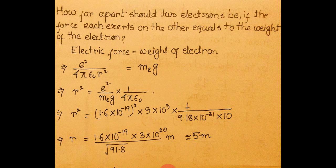You should remember this result for competitive exams, since detailed calculations are not always possible. A key value to remember: if two electrons are separated such that their repulsive force equals the weight of one electron, the separation between them is approximately 5 meters.